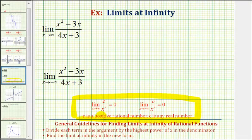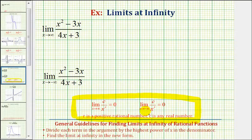This tells us that if we have a rational function where the numerator is a constant and the denominator is either increasing or decreasing without bound, the function value is always going to approach zero. To get a better feel for this, let's take a look at a couple of graphs.